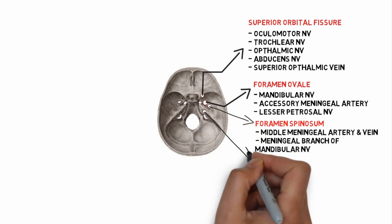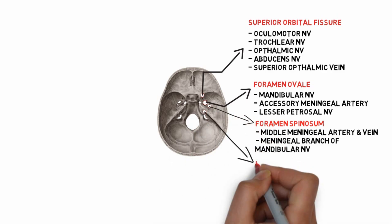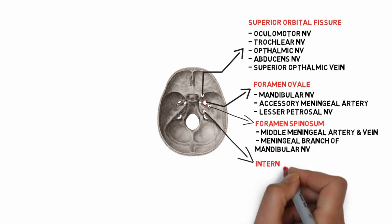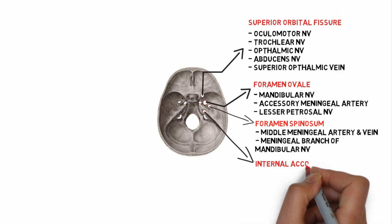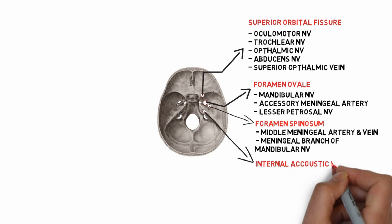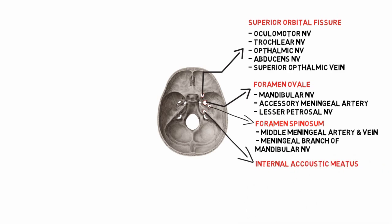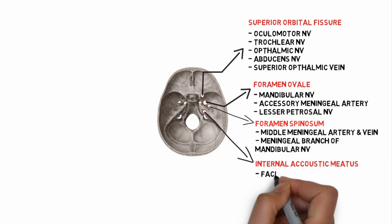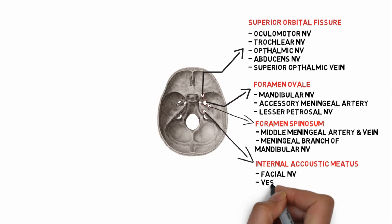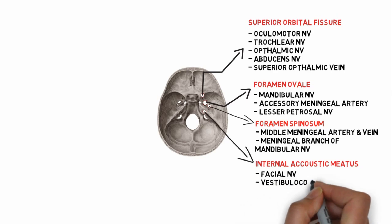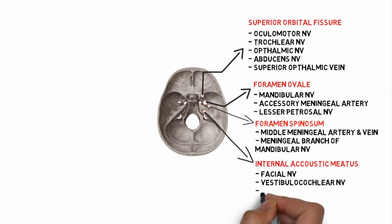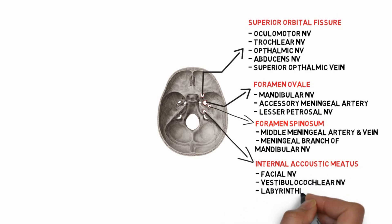The fourth one is the internal acoustic meatus. Structures passing through it include the facial nerve, the vestibulocochlear nerve, and the labyrinthine artery.